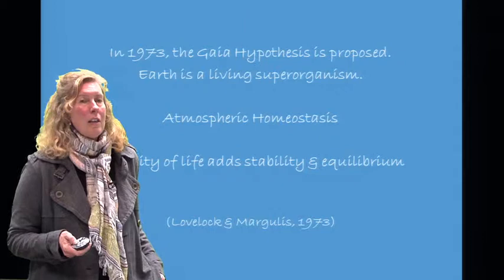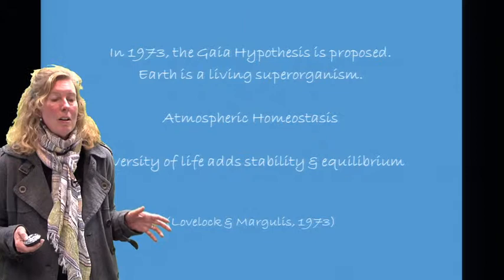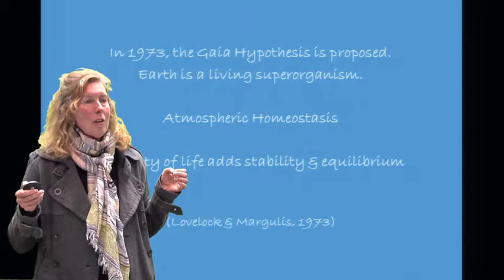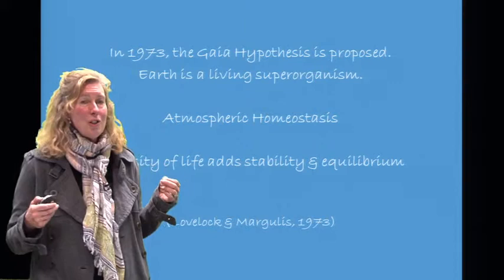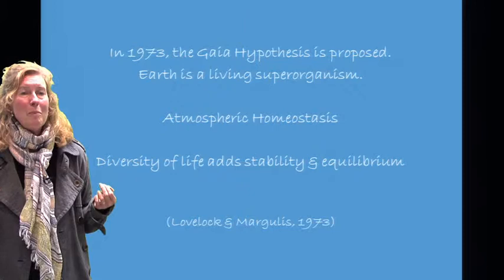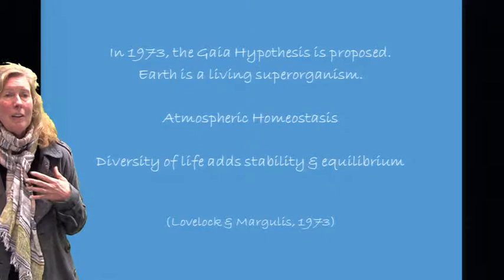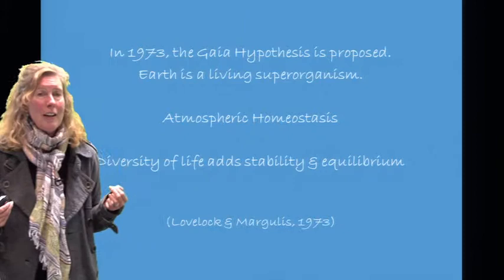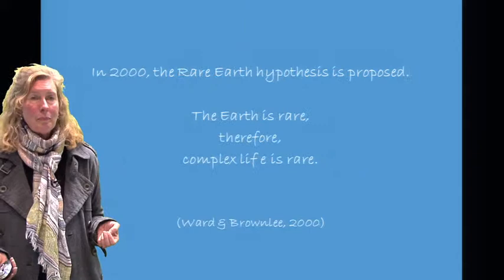In 1973, the Gaia Hypothesis was proposed. It states that the Earth is a living superorganism — it has a circulatory system, with lakes, rivers, and oceans, and it maintains an atmospheric homeostasis just as we do. Further, it is stated that the diversity of life — biodiversity — adds stability and equilibrium to the biosphere.